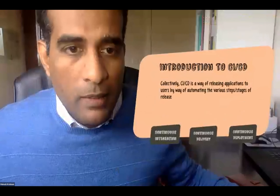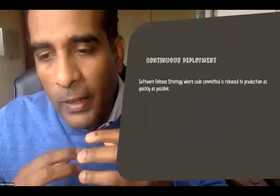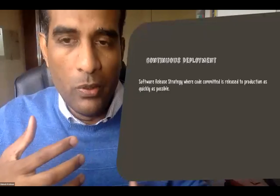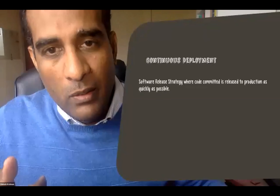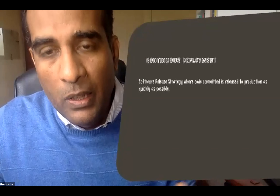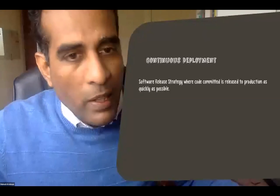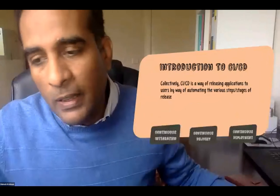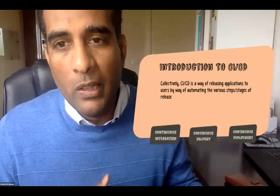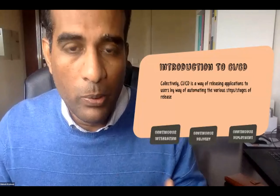Continuous deployment is effectively a software release strategy where as soon as a developer commits code, the process of creating artifacts and releasing all the way into production happens as quickly as possible. It may go through gates like peer review and automated tests before reaching production. Organizations have varying levels of maturity with CI/CD — many just do continuous integration and continuous delivery. Continuous deployment is much harder to achieve, and organizations often put governance barriers in front of it.